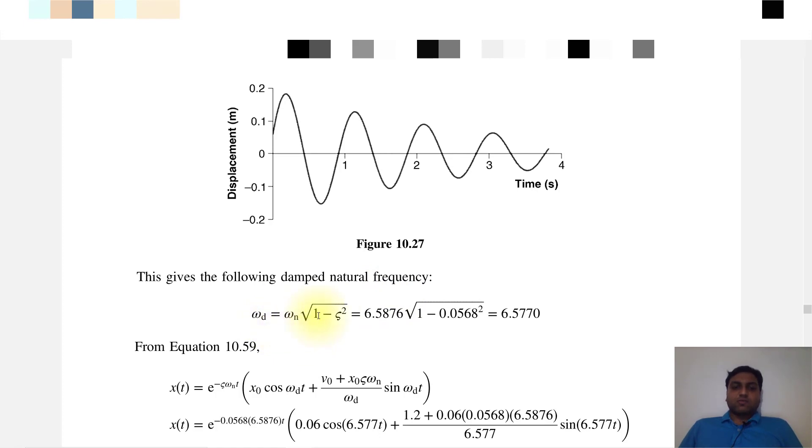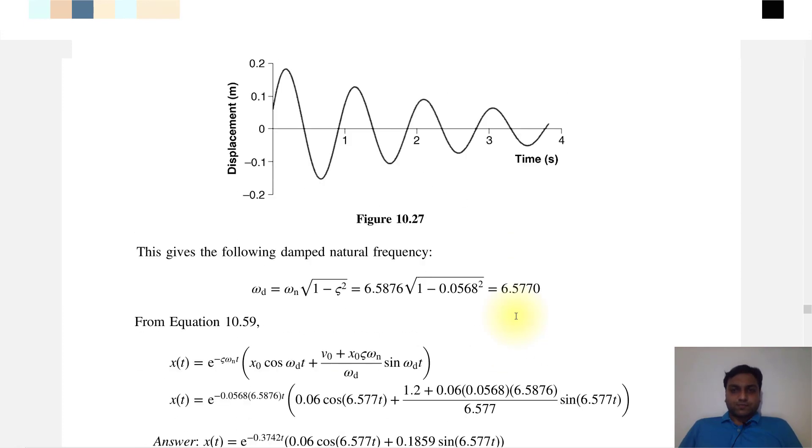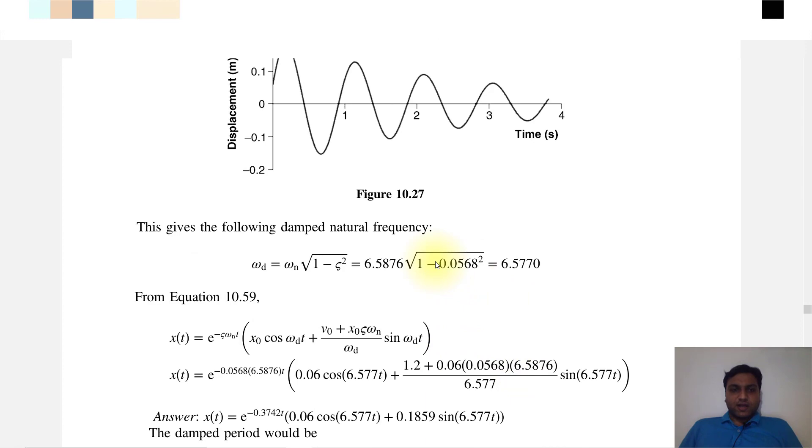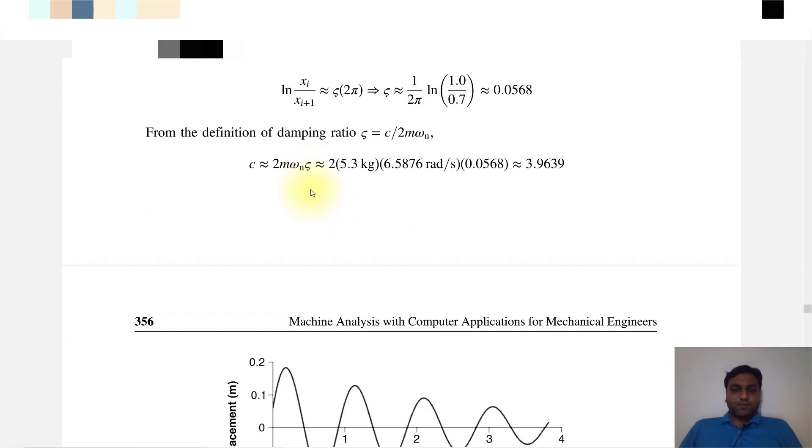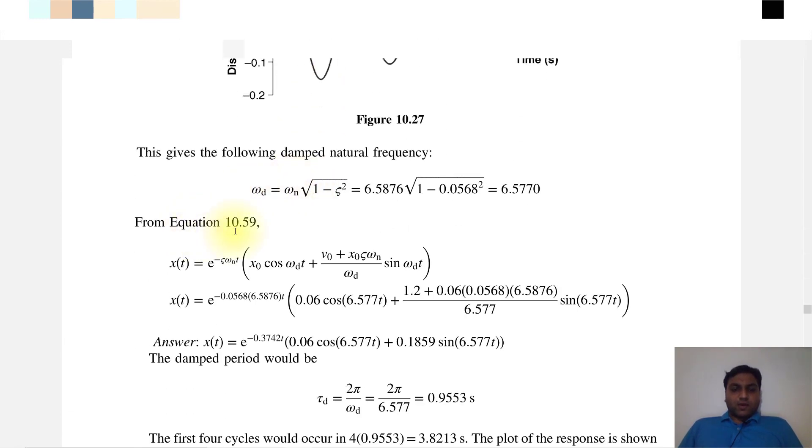This gives the following damped natural frequency: ωd equals ωn times the square root of (1 minus zeta squared), which equals 6.577. So our system is underdamped.